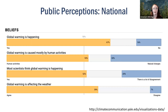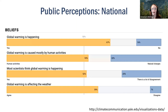We can also look at public perceptions. The majority believe global warming is happening, that it's caused mostly by human activities, that most scientists think global warming is happening, and that it's affecting the weather. But it's worth noting that not everyone agrees: about a third believe it's caused mostly by natural changes, and a fourth believe there's a lot of disagreement among scientists on global warming. Climate beliefs are important to know when communicating to your audience.